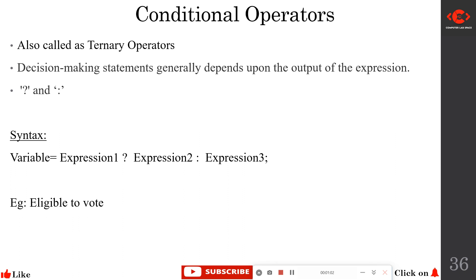Conditional operators are also called ternary operators. It is a single programming statement and can perform only one operation. It is called a ternary operator because it operates on three operands. The syntax is: variable = expression1 ? expression2 : expression3 — where the question mark and colon are the ternary or conditional operators.